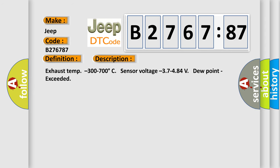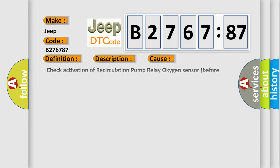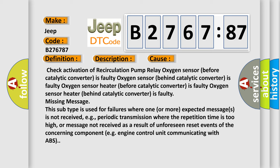And now this is a short description of this DTC code. Exhaust temp minus 300 to 700 degrees Celsius, sensor voltage minus 37 to 484 volts, dew point exceeded. This diagnostic error occurs most often in these cases: Check activation of recirculation pump relay oxygen sensor before catalytic converter is faulty, oxygen sensor behind catalytic converter is faulty, oxygen sensor heater before catalytic converter is faulty.